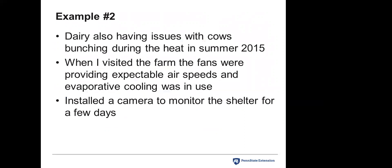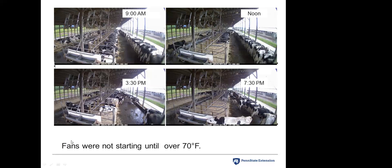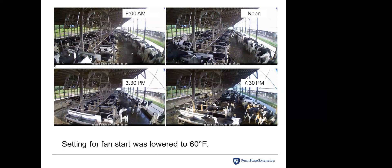Another heat abatement example that same summer at a neighboring farm: I installed cameras to watch what was going on. The day I walked through, air speeds were very good and the evaporative cooling system was running — I couldn't understand why the cows were bunching. After hanging the camera and reviewing from 9 a.m. to noon to 3:30 to 7:30 p.m., I could watch the fans as to when they came on and figured out the fans weren't coming on until well over 70 degrees. We lowered the starting temperature down to 60 degrees, and the result was much better cow distribution across the barn — not perfect, but significantly better than before. We were addressing issues on an individual farm.